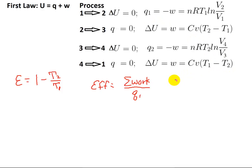The sum of the work is simply going to be Q1 plus Q2 over Q1, and that would be equal to 1 plus Q2 over Q1.